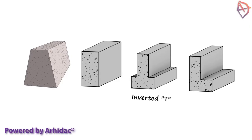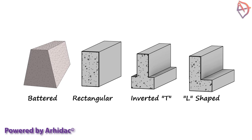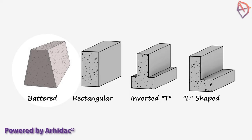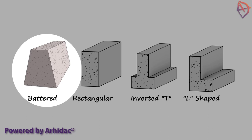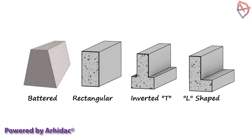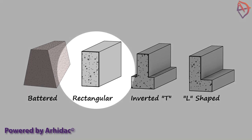Common foundation shapes are inverted T-shape, battered, L-shaped, and rectangular. A T-shape foundation is constructed with a stem wall supported by a spread footing. The sides of a battered foundation are wide at the base and taper toward the top. An L-shaped foundation is similar to an inverted T-shape foundation, but the footing extends from only one side of the foundation wall. A rectangular foundation, designed for light wall loads and firm soil conditions, has uniform wall thickness over its entire height.